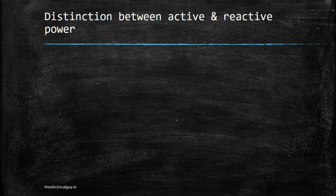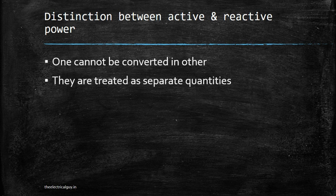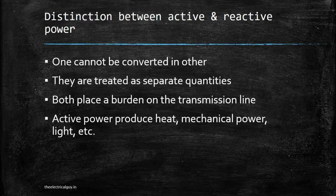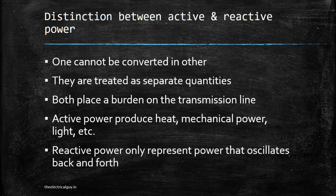Now let's see the differences and similarities between active and reactive power. One cannot be converted into the other. They are treated as separate quantities — both are separate quantities, remember that. Both place a burden on the transmission line, whether it is active power or reactive power. Active power produces heat, mechanical power, light, etc. Reactive power only represents power that oscillates back and forth and is not used in the power system for any kind of useful work.